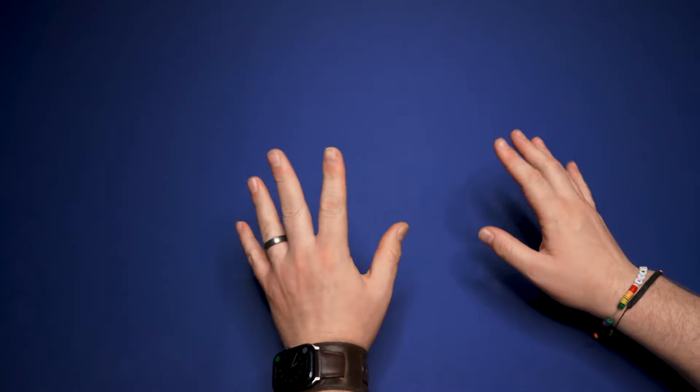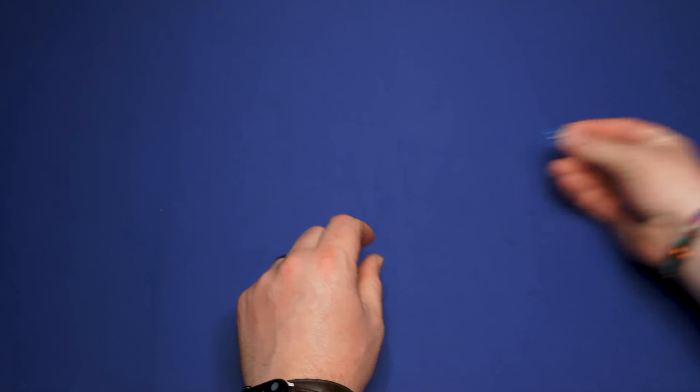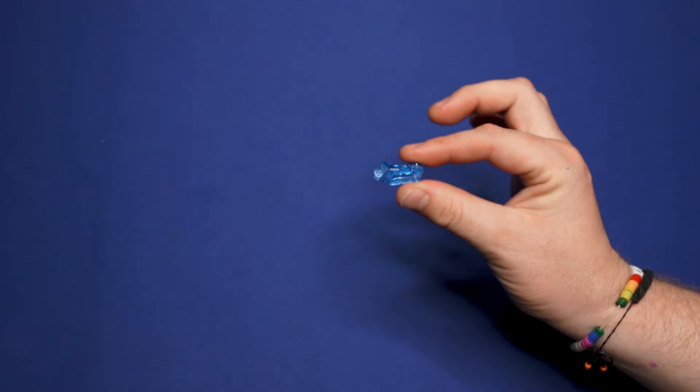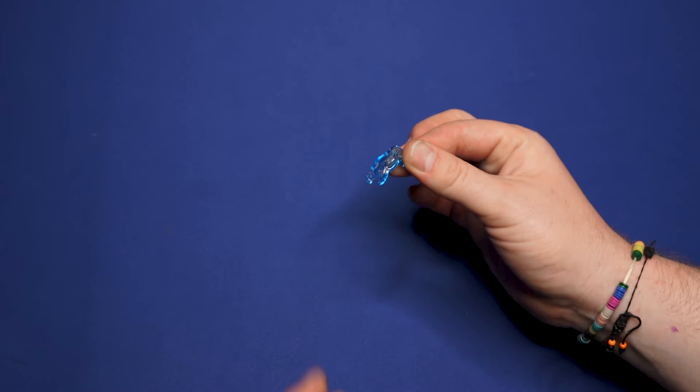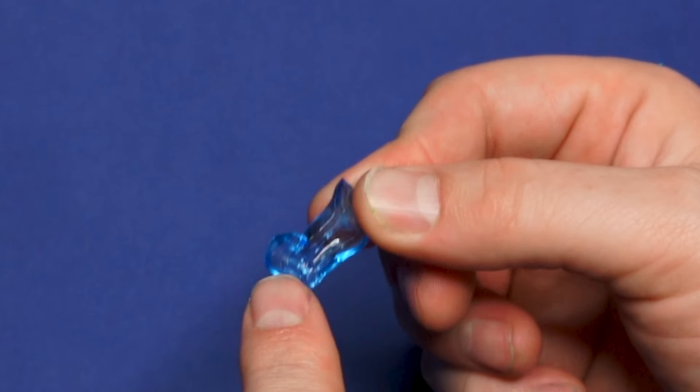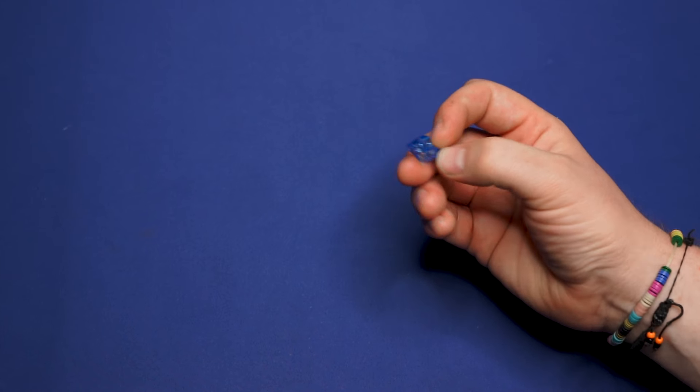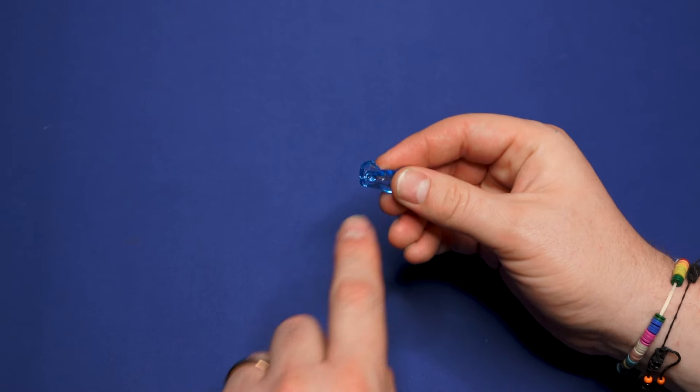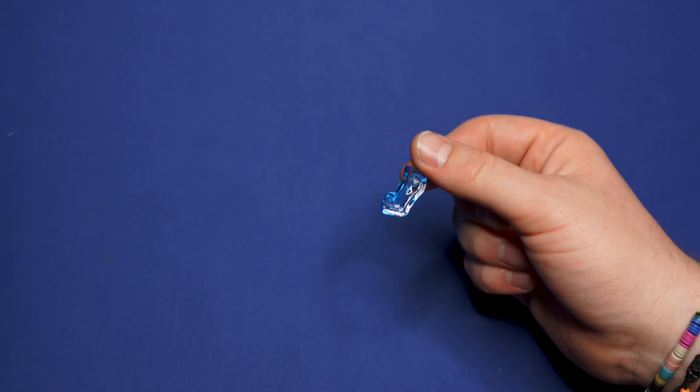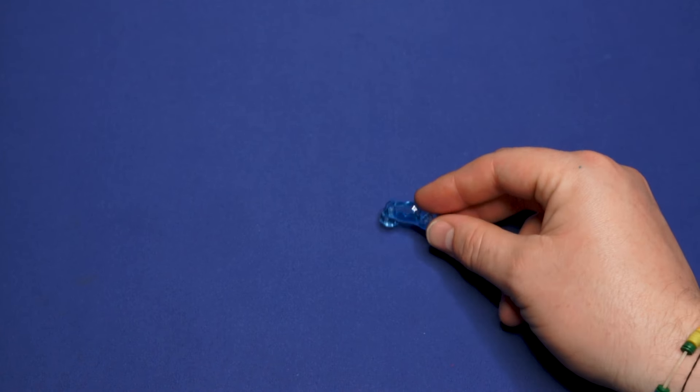To begin, we're going to build his arms first, starting with this piece right here—a blue bicep. If you look closely, right there, very tiny, is the number 19. If you're using the instructions, you'll notice every single piece has a teeny tiny number somewhere on it, and that will help you use the instructions as a guide. However, we don't need to do that.